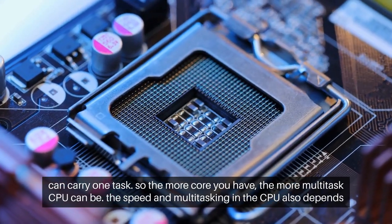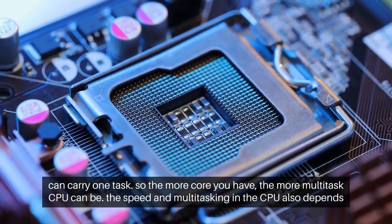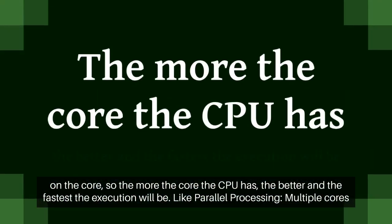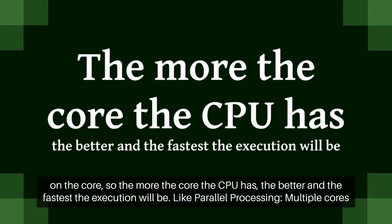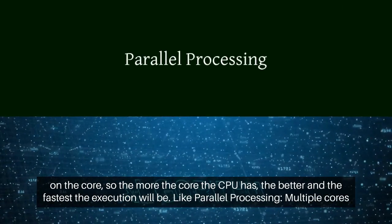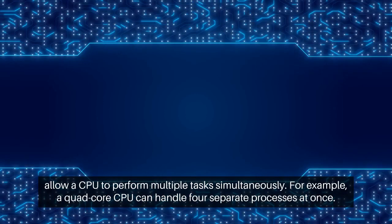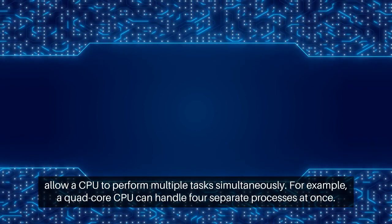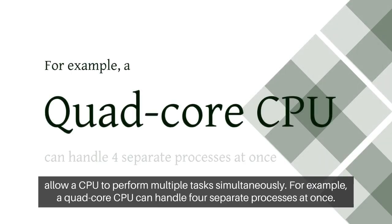The speed in multitasking in the CPU also depends on the core — the more cores a CPU has, the better and faster the execution will be. Like parallel processing, multiple cores allow a CPU to perform multiple tasks simultaneously. For example, a quad-core CPU can handle four separate processes at once.